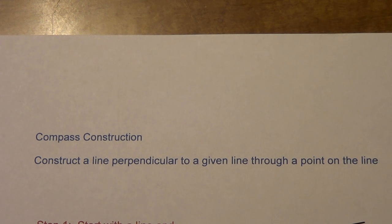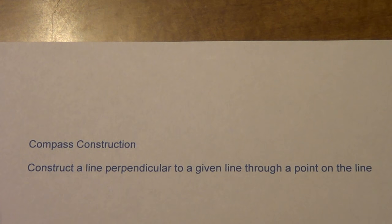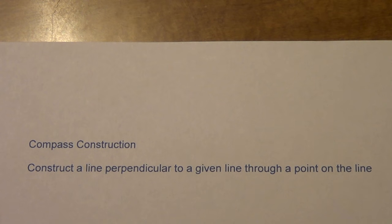We're going to do some compass work for Chapter 5. This might be our last compass work of the year, if I remember correctly. We're going to construct a line perpendicular to a given line through a point that is on the line. Earlier we did one where it had a point not on the line, so this is slightly different from that, and the compass work looks a lot different.